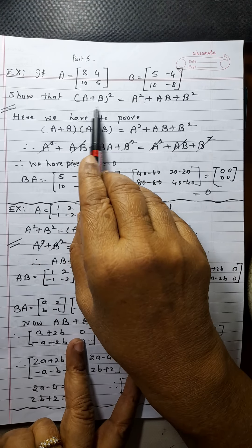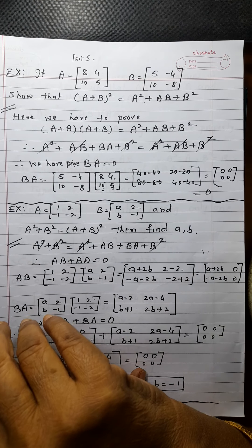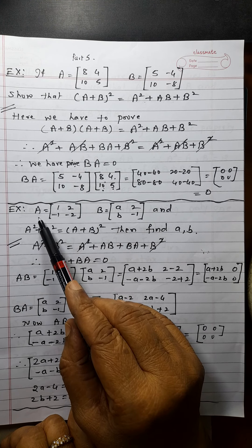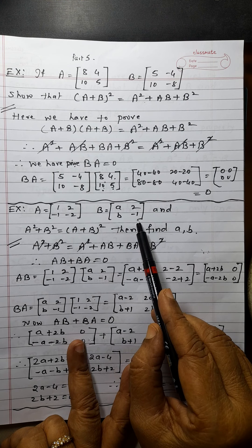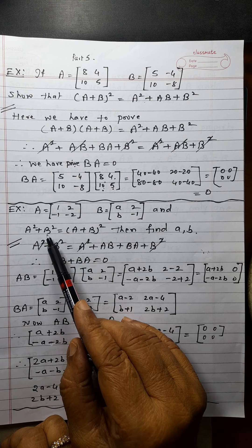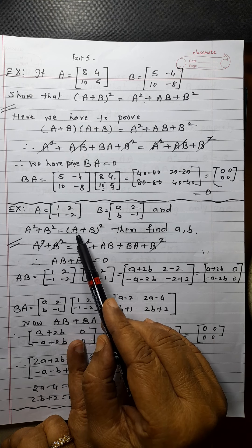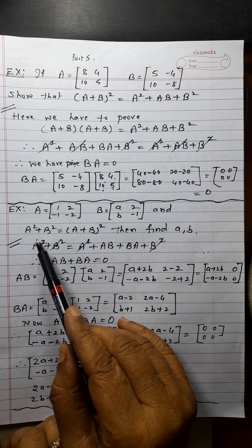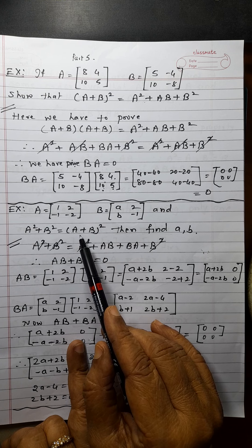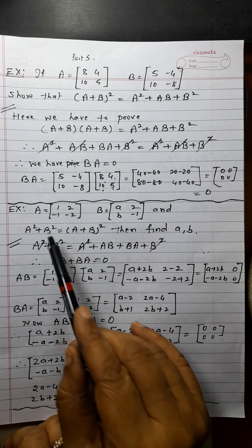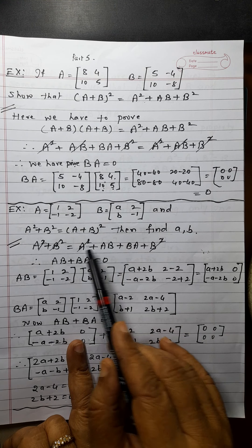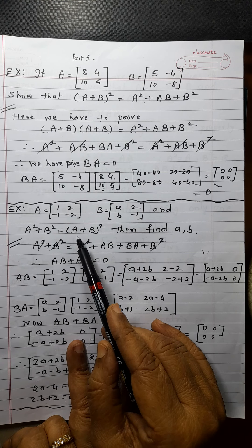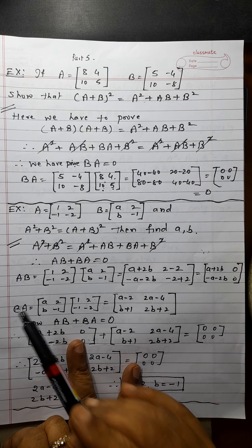All these tricks you should know, then problems will become easy. Another problem: A is this, B is this and it is given that A² + B² equals (A+B)². Find A and B. It is given — no need to prove. You should read the problem carefully, otherwise as soon as you get this problem you will try to prove it. No, we cannot prove this one — it is given. Find A and B.